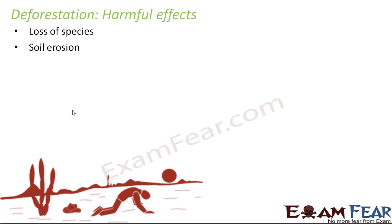Soil erosion is another effect. The soil in forests is tightly bound by the roots of plants. When we remove the plants, the soil becomes very loosely bound and is easily carried away by water during rains or floods. This soil erosion degrades the quality of the soil, making that land no longer suitable for cultivation purposes.